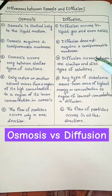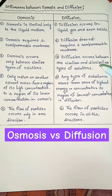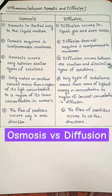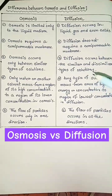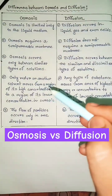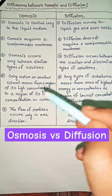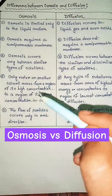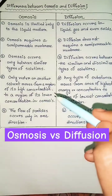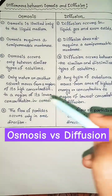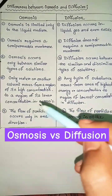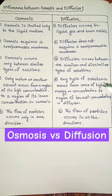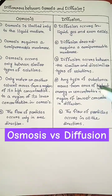Osmosis occurs only between similar types of solutions, but diffusion occurs between similar and dissimilar types of solution. Only water or another solvent moves from a region of its higher concentration to a region of its lower concentration in osmosis.